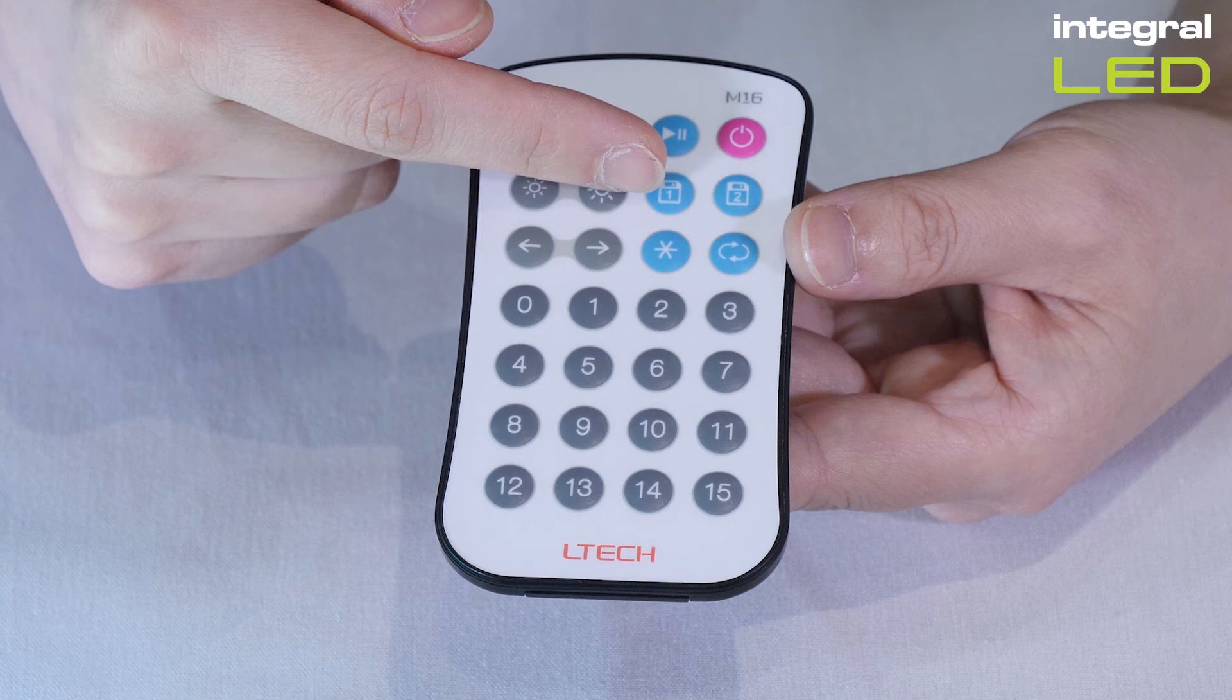These scene keys, marked one and two, allow users to save up to two of their favorite effects. A long press will save the current effect to that button. A short press will play the effect currently saved to that button.